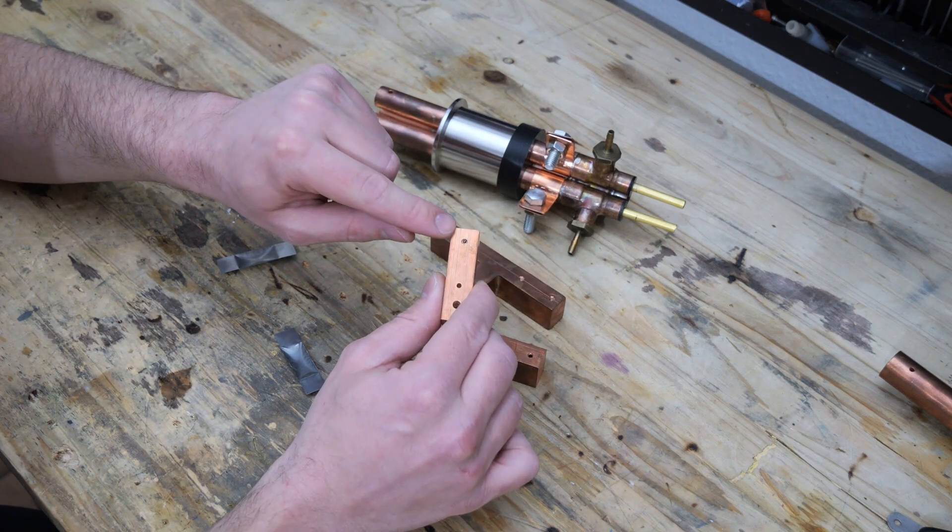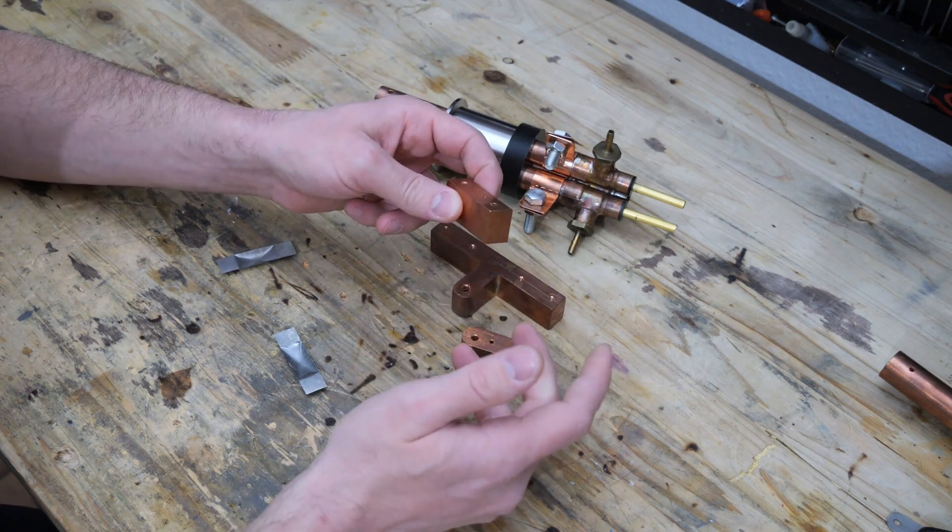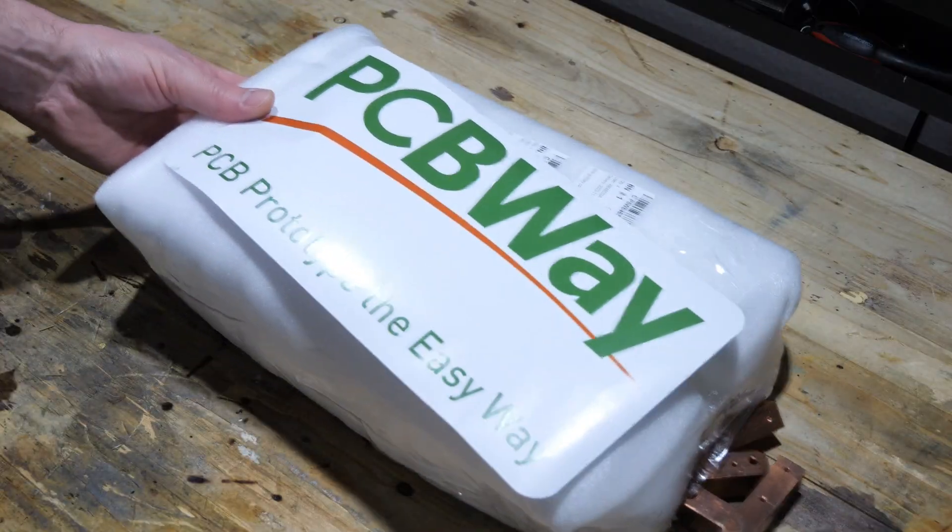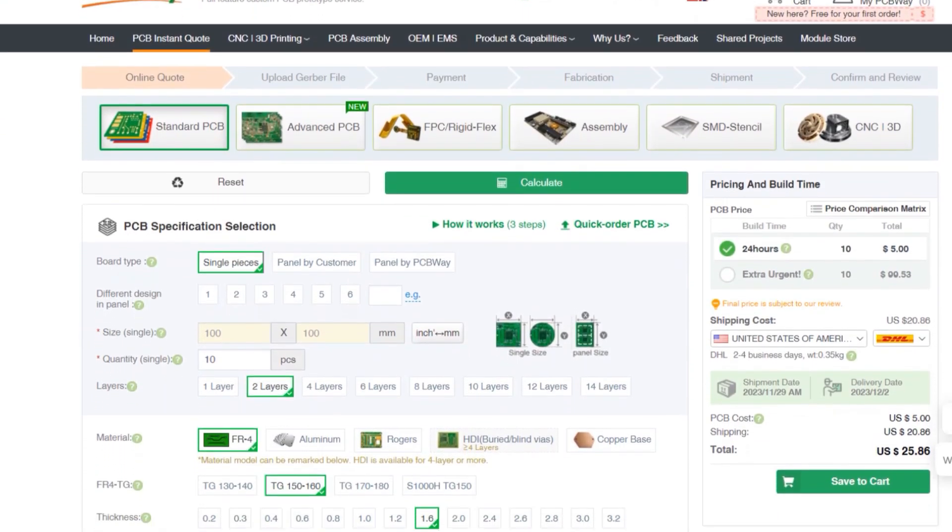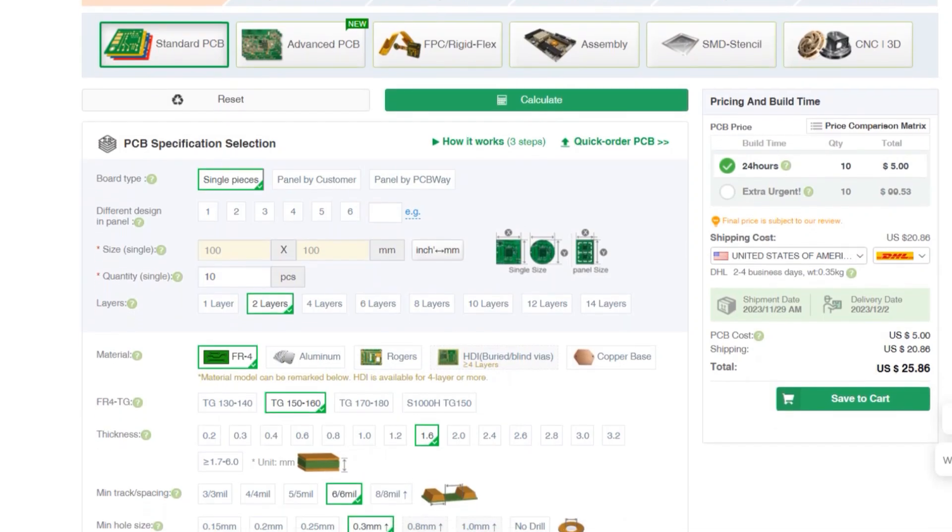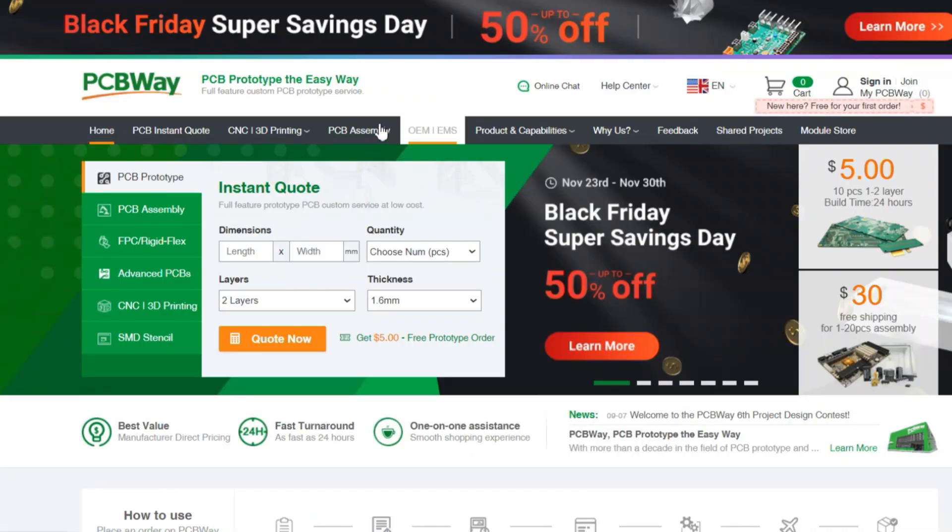And just when I broke my second drill bit in this copper piece here, I got a message from today's sponsor, PCBWay. As the name suggests, PCBWay is the perfect partner if you need circuit boards manufactured and assembled. However, that's not all they excel at.